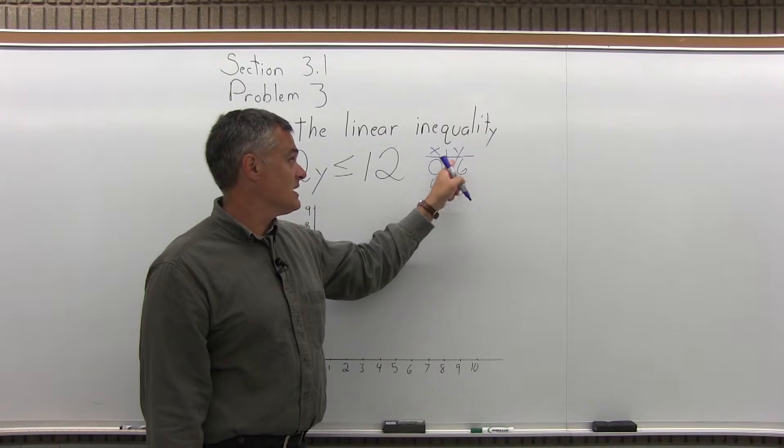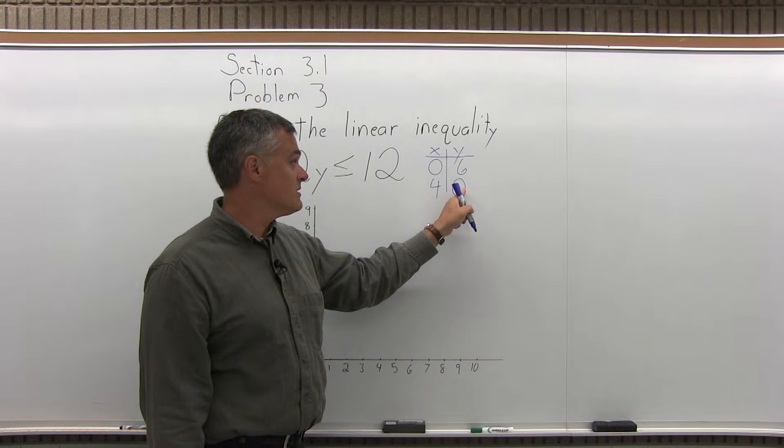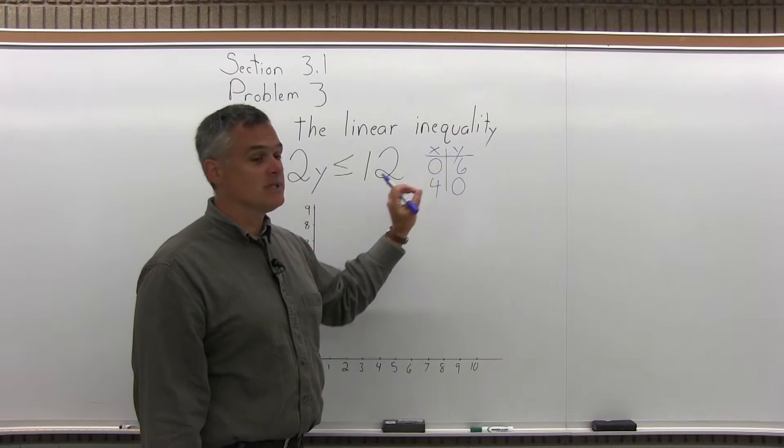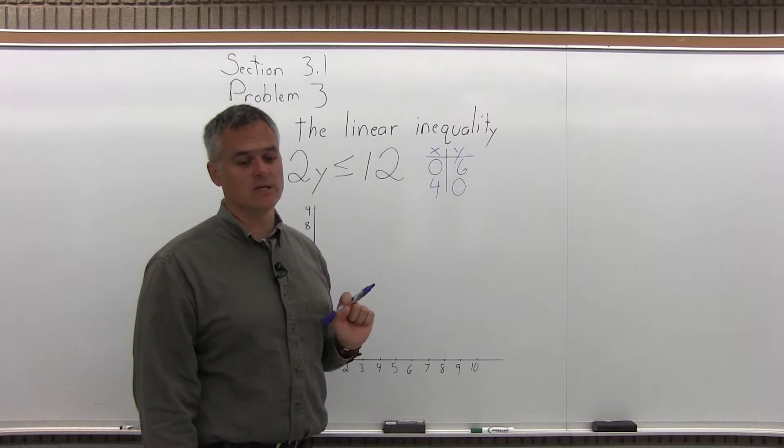My 2 points are 0, 6, x is 0, y is 6, and 4, 0, x is 4, y is 0. So that's step 1. I have 2 points that make my linear inequality true if I pretend it's an equation.